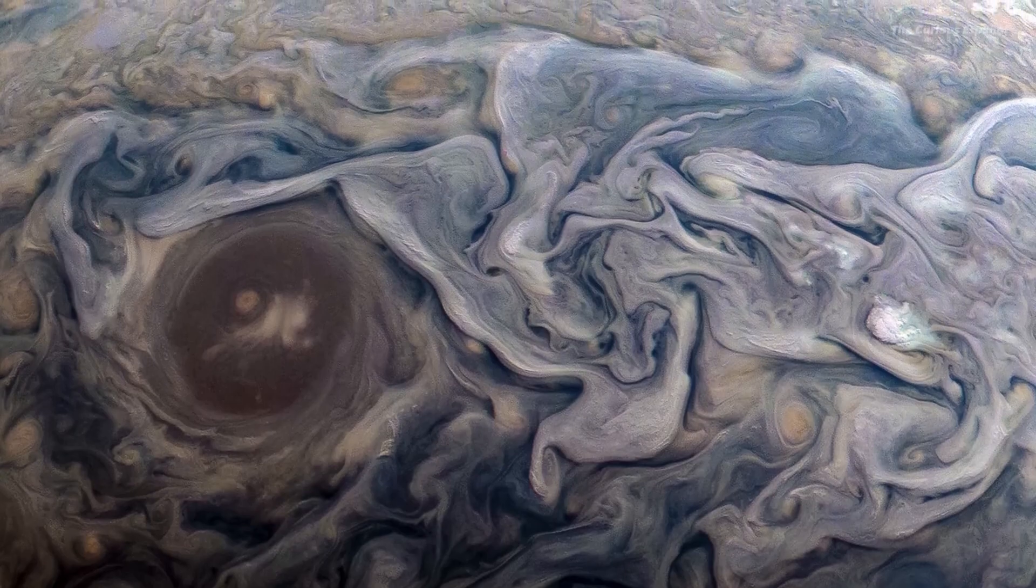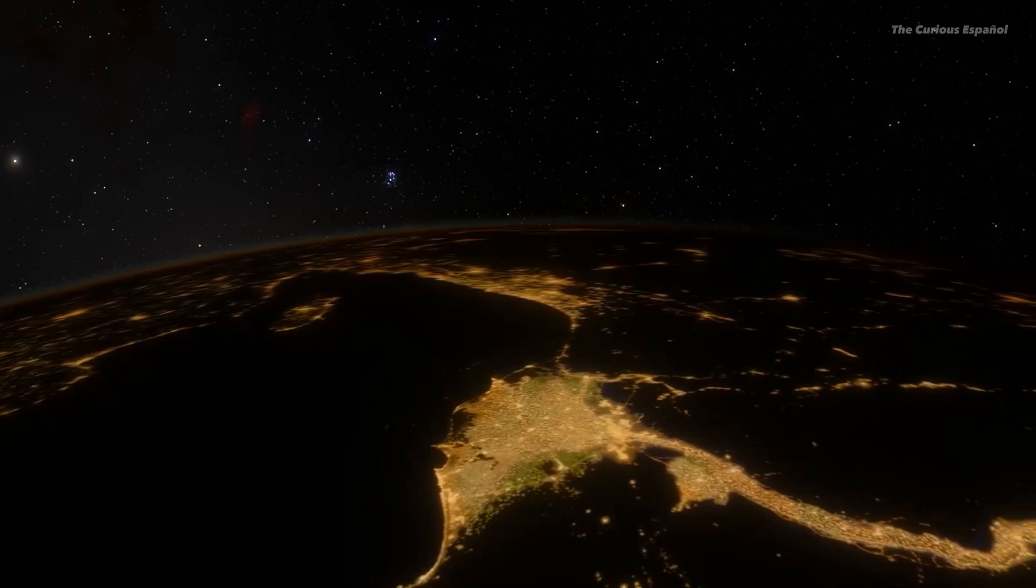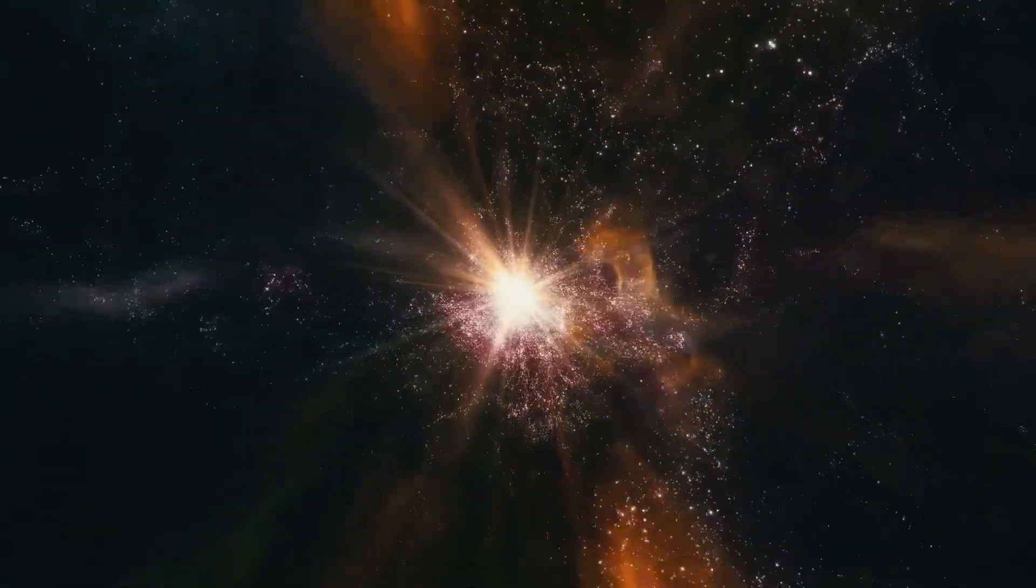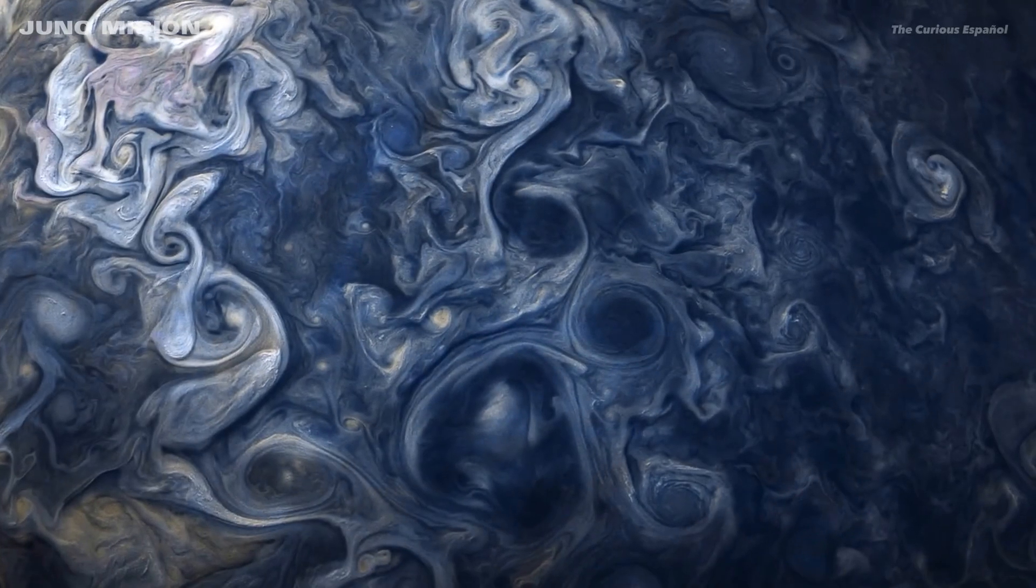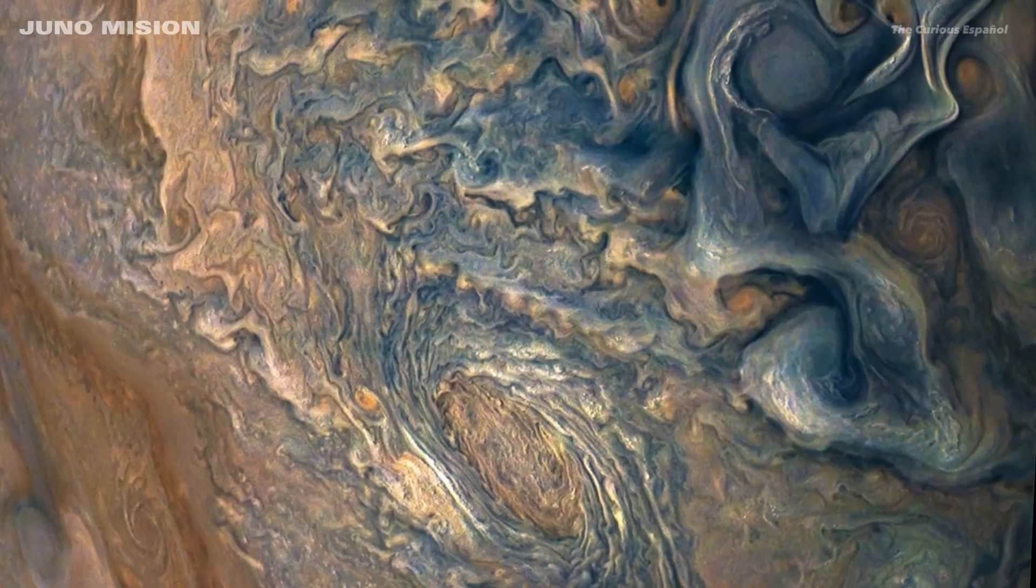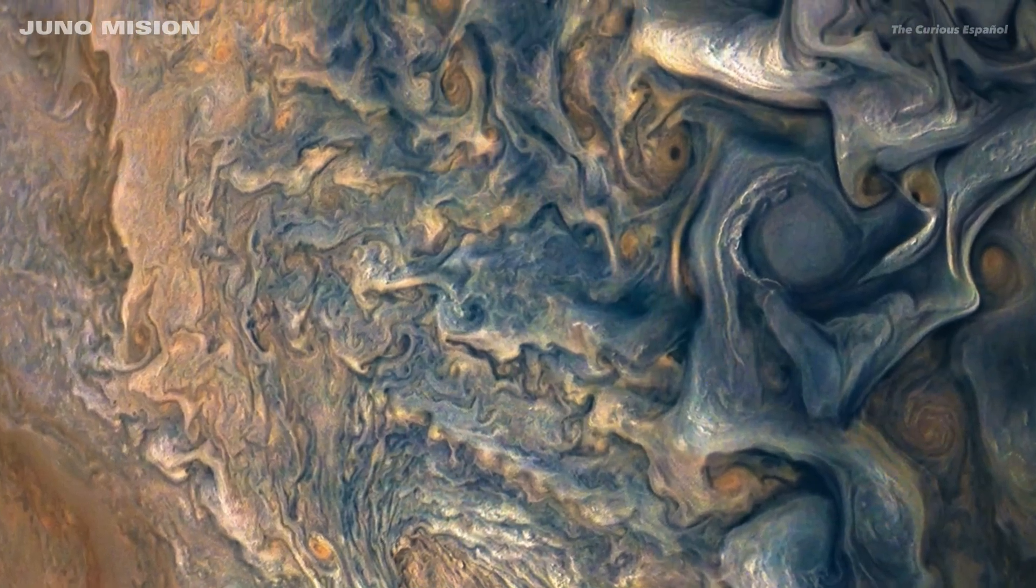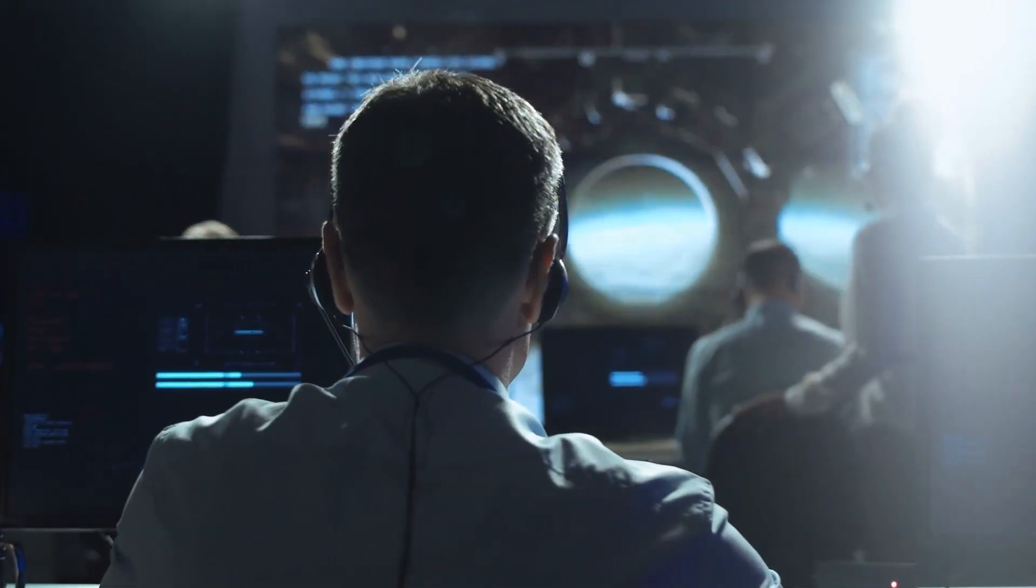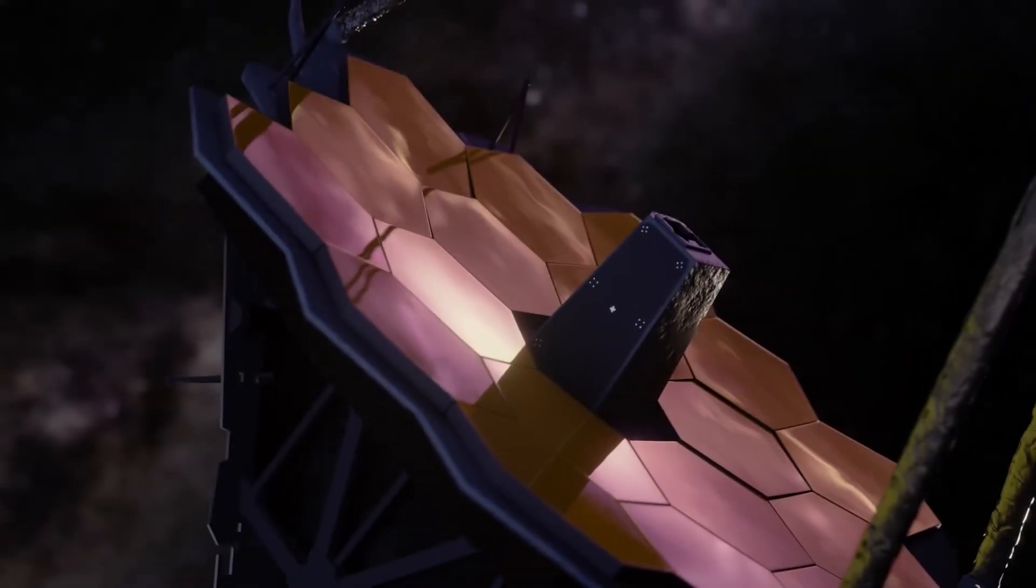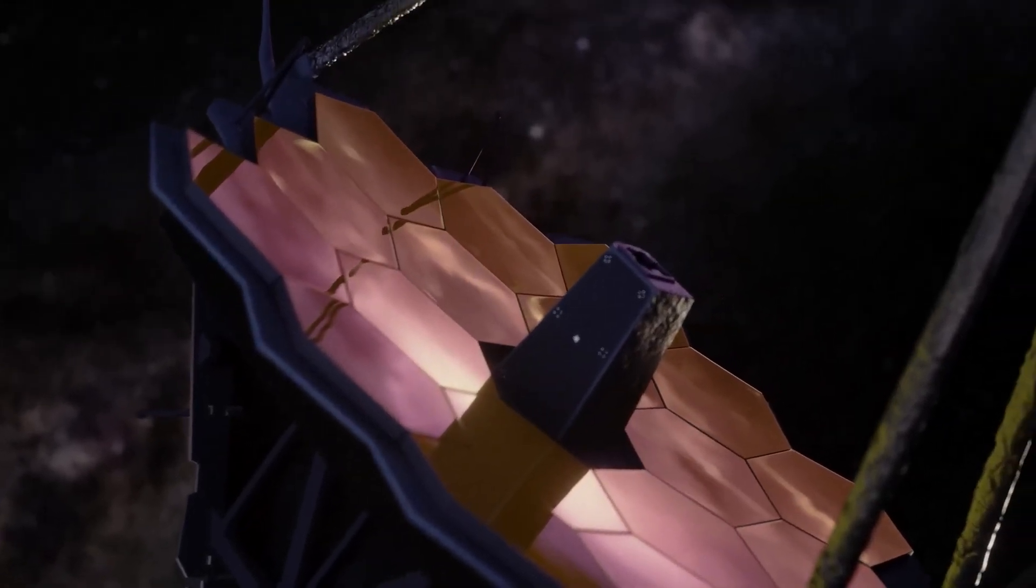About eight times closer to its star than Mercury is to the Sun, this Saturn-sized gas giant boils as it orbits its star. The planet's atmosphere is dominated by thick clouds containing sulfur and silicates, including sulfur dioxide. Scientists were able to identify carbon dioxide in its atmosphere using two of Webb's spectrographs.